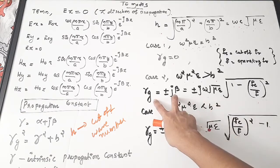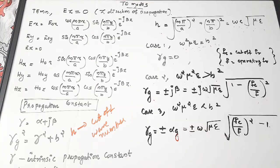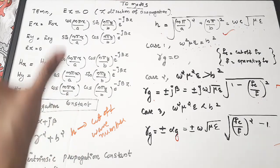Case 3: when ω²με < h², then γg = ±αg (real part only), where αg = ±ω√(με) · √((fc/f)² − 1). The most important equation is the cutoff wavenumber: h = √[(mπ/a)² + (nπ/b)²]. You don't need to memorize all equations; just know the standard form of the field equations.